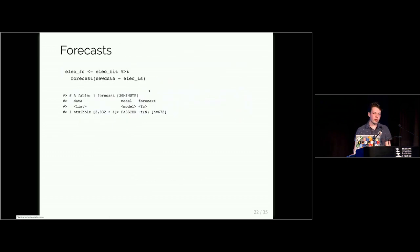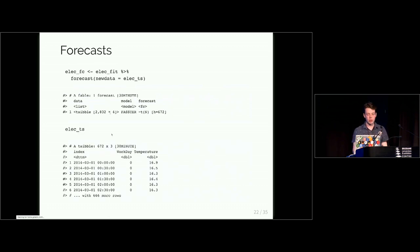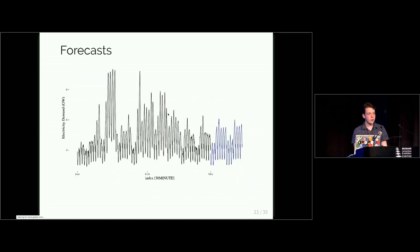So to use it to produce forecasts it's exactly like you would in the Fable package. You pipe your model into the forecast function, provide some new data and in this data because we've used extra information such as what is a working day and what is not a working day and future temperature information, we want to provide that as well. And this produces a faster object, a Fable and we're predicted a couple of weeks ahead of time.